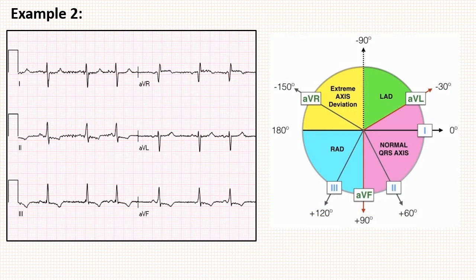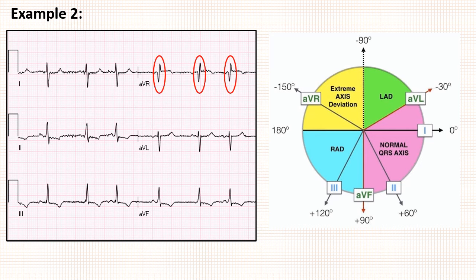We will see another example for better understanding. Look at this ECG. Apply step 1: equiphysic complexes are seen in lead aVR. Then step 2: find the lead which is perpendicular to aVR, which is lead 3. And last is step 3: see the direction of waves in this perpendicular lead. Here, the direction is positive.